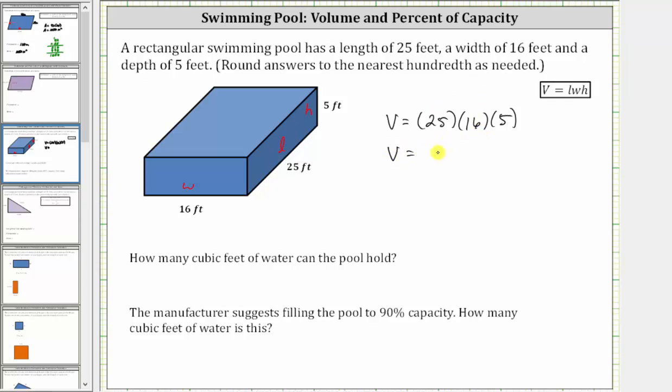25 times 16 is equal to 400. The volume is equal to 400 times 5, and 400 times 5 is equal to 2,000. The volume is equal to 2,000 cubic feet, or 2,000 feet cubed. So we now know the pool can hold 2,000 cubic feet of water.